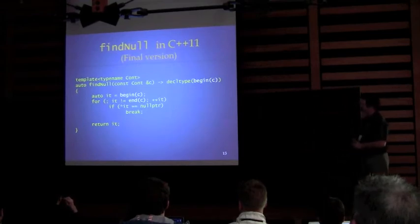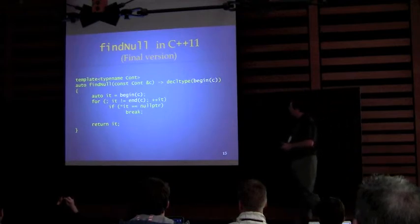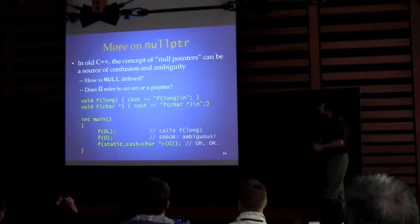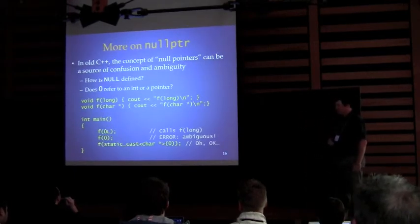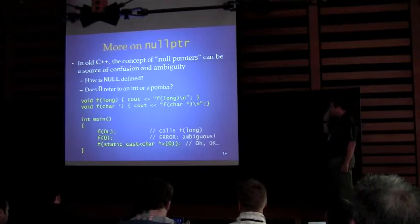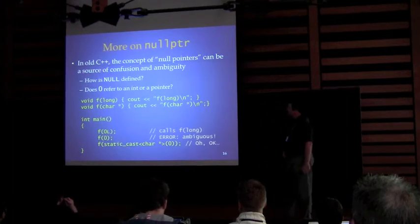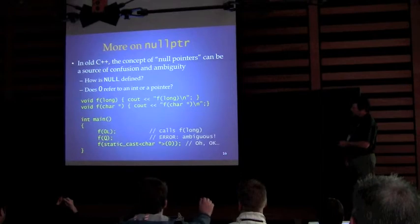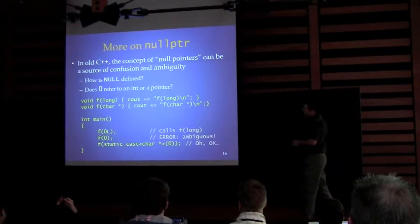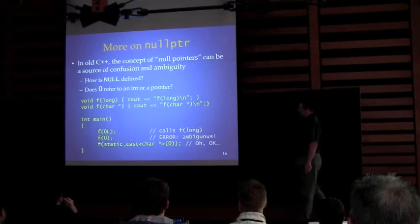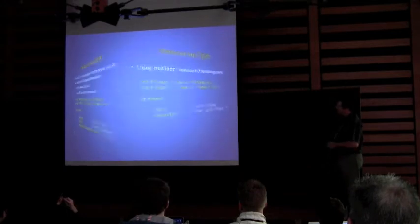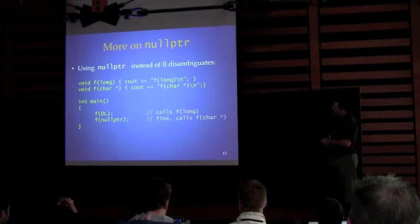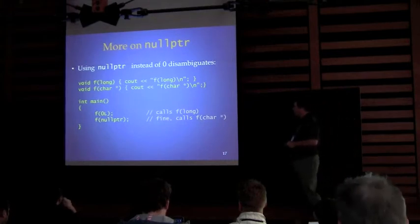We can now apply that additional change to findNull. Another advantage of nullptr is that it eliminates ambiguity. In old C++, if you overload a function F for long and for char*, as long as you provide exact types the compiler is happy, but if you provide a value that can equally convert to either one it's a fatal error. With nullptr, it unambiguously matches the pointer overload, so there are no ambiguity issues with overloads where they all worked in old C++.